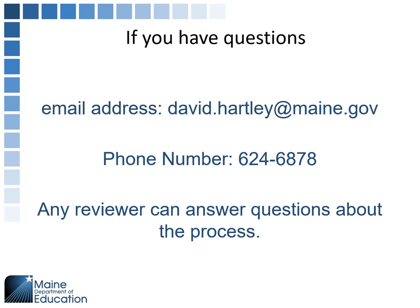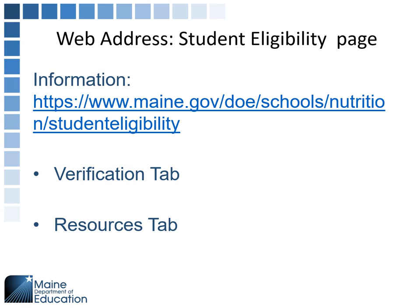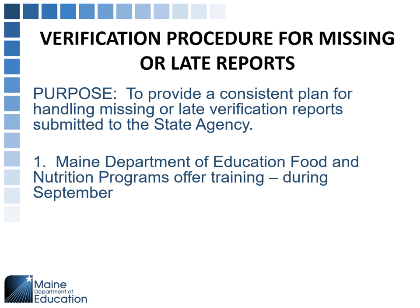If you have questions, send an email, call, or ask other reviewers — they can answer questions and will contact David Hartley if unsure. The student eligibility webpage has a verification tab and resources tab where you can find the eligibility manual, sample letters, and a tracking form to help keep the process on schedule.